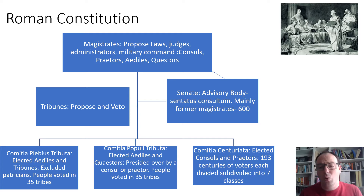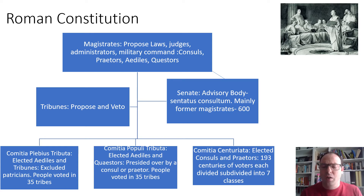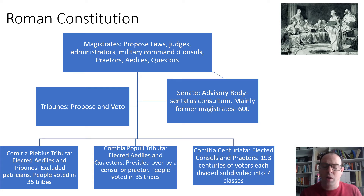There was another part of the magistrate group: the censor, a slightly different position with a slightly longer term in office of 18 months. You had to have been a consul beforehand. The censor largely maintained the honour of the Senate, made moral judgments, conducted a census of the people, and carried out various administrative tasks. In practice, though, the consul was the most powerful and strongest position. Magistrates are elected every year, with rules and regulations about when you can hold each position and how often.